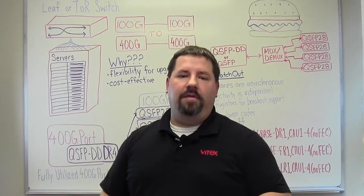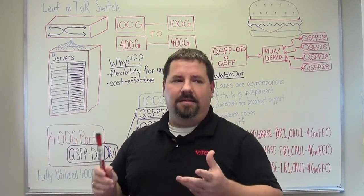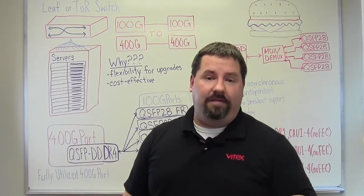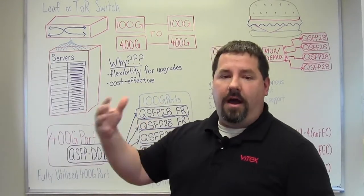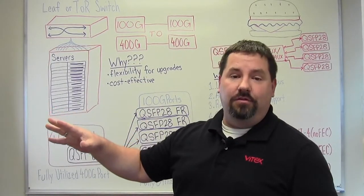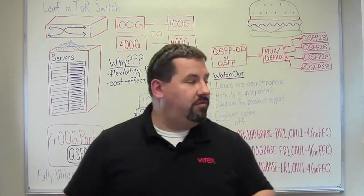So there's only a couple things that are certain in life, right? We got death, taxes, and optics are going to get faster and faster. So what are some of our options if we have a 100GB solution and we need to go to 400GB?